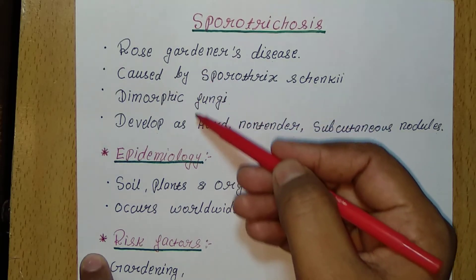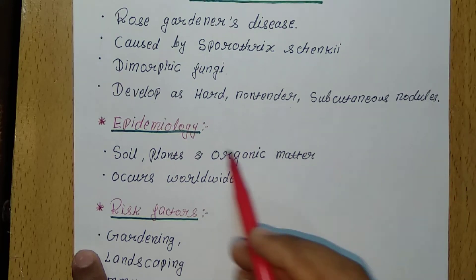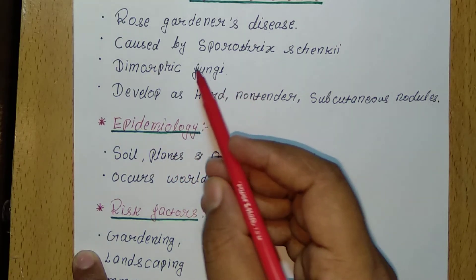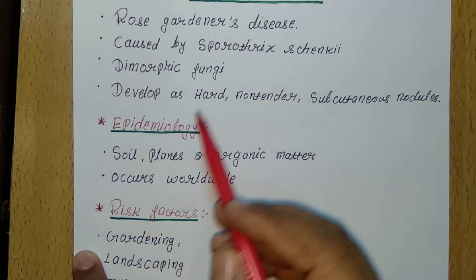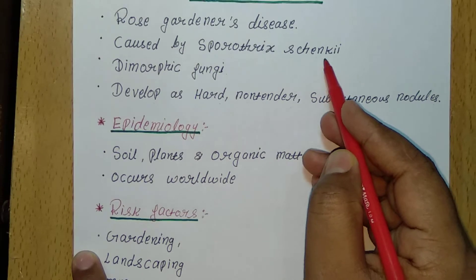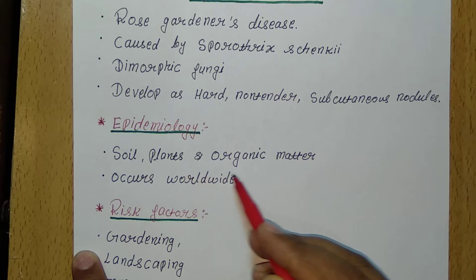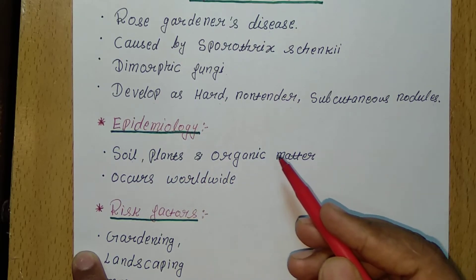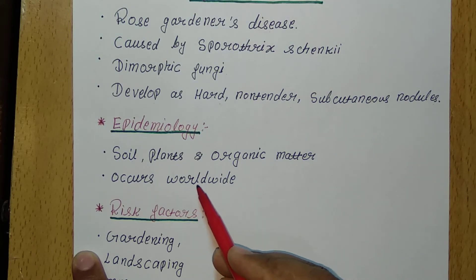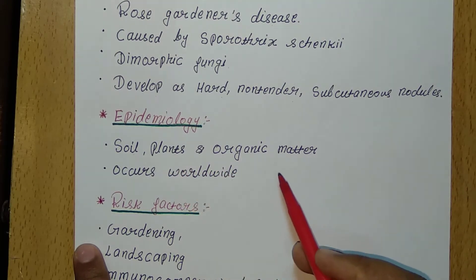Now I am going to tell about the epidemiology of Sporotrichosis. This Sporotrichosis, or rose gardener's disease, is mainly caused by Sporothrix schenckii. Sporothrix schenckii is mostly found in soil, plants, and organic matter. Sporotrichosis occurs worldwide.